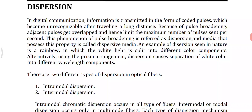Adjacent pulses overlap each other, so we have to limit the maximum number of pulses sent per second, that is, Mb per second. Pulse broadening is referred to as dispersion, and the media that exhibits this property is called dispersive media. For example, in the case of a rainbow, white light is split into different color components — that is a dispersion effect.